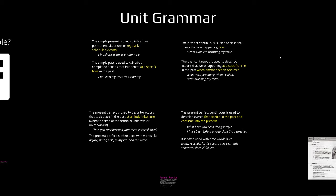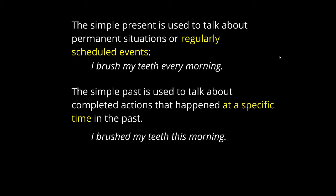We talked about four different grammars: simple present, simple past, present continuous, past continuous, and present perfect continuous. The simple present is used to talk about permanent situations or regularly scheduled events — 'I brush my teeth every morning.' The simple past is used to talk about completed actions that happened at a specific time in the past — 'I brushed my teeth this morning.' It needs to have happened at a specific time — that's what separates it from the present perfect.